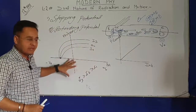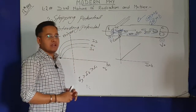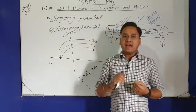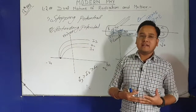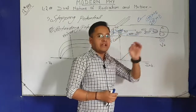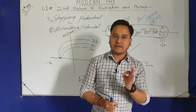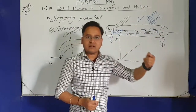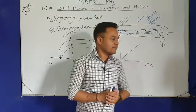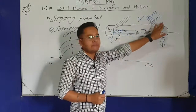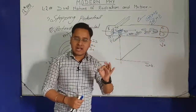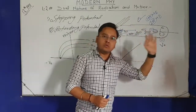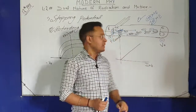The important conclusion from this graph: when intensity is increased, number of electrons increases, therefore photo current magnitude increases. But the energy of each electron remains the same — this is a very important line. When intensity increases, number of electrons increases, but every electron's energy remains the same.